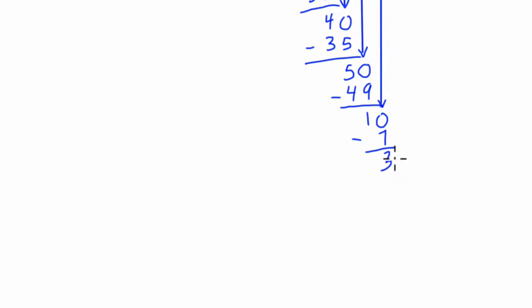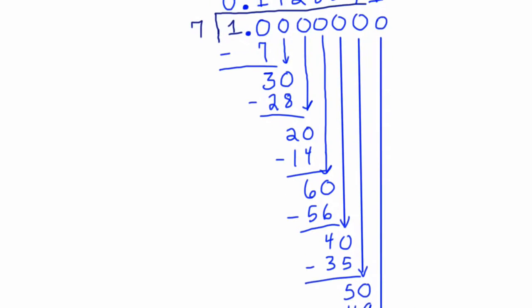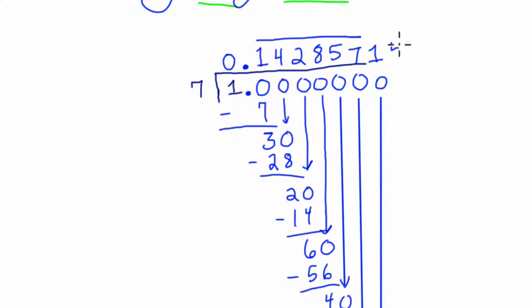Does 7 go into 3? No. But it goes into 30. And it goes into it 4 times. And 7 times 4 is 28. And we subtract. And we get a 2. And 7 goes into 20 two times. And what you might see is happening here. We just said it goes into 30, right, 4 times. And this place value here. And then it goes into 20 two times.